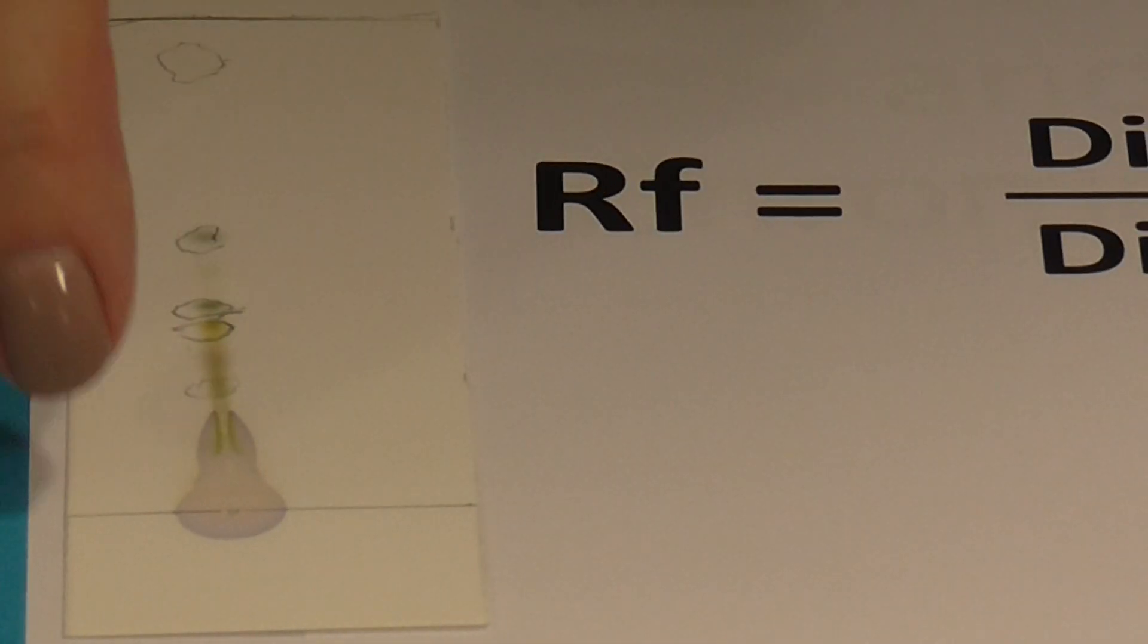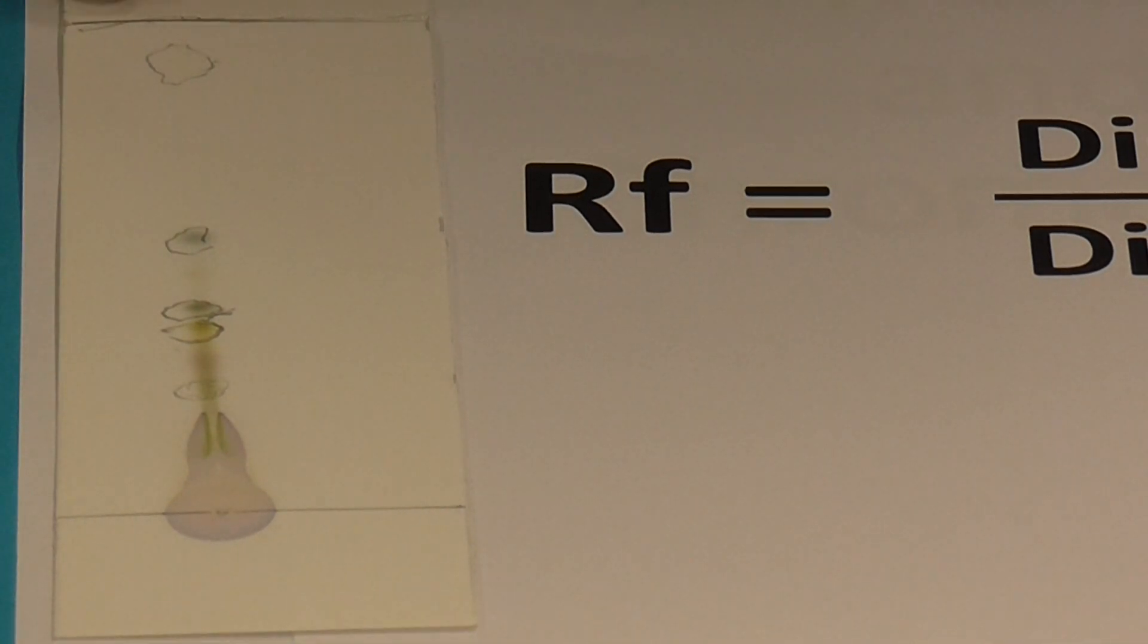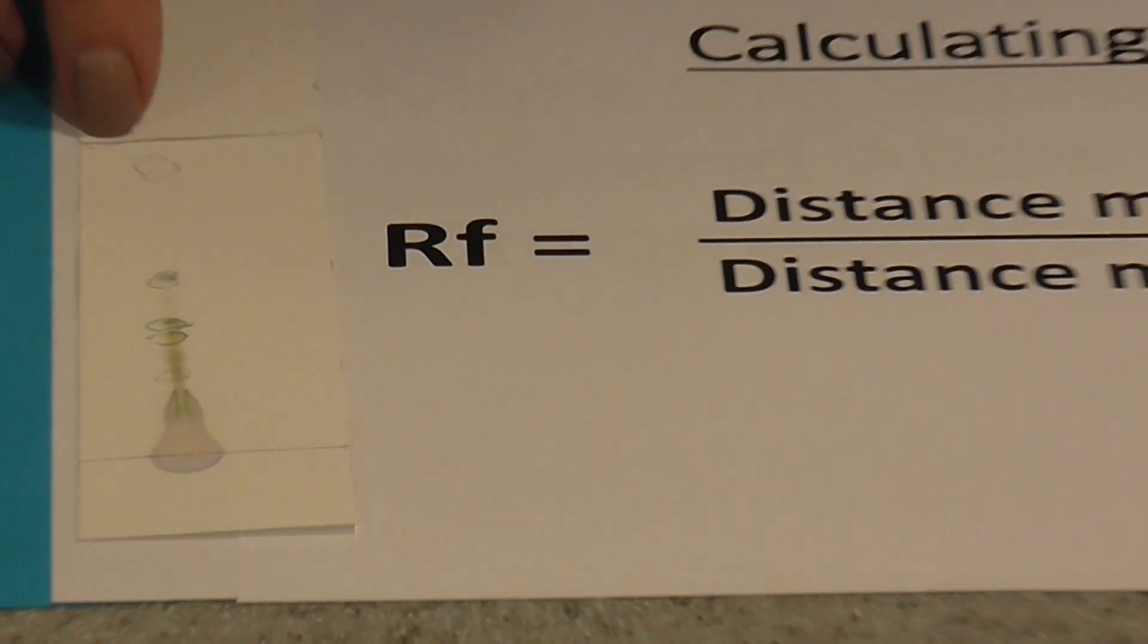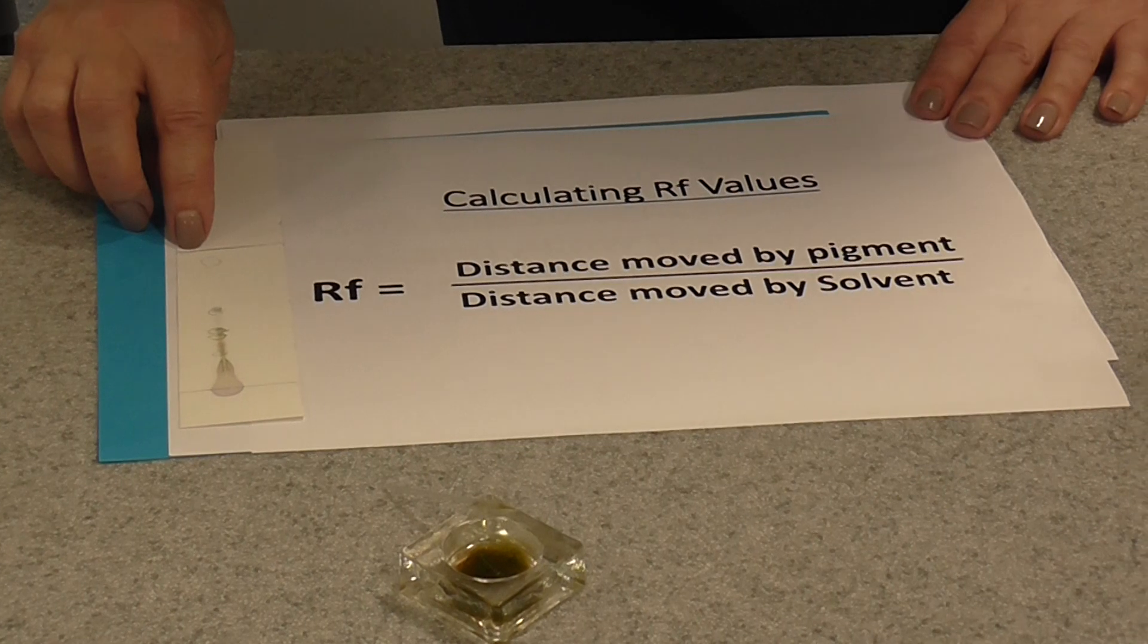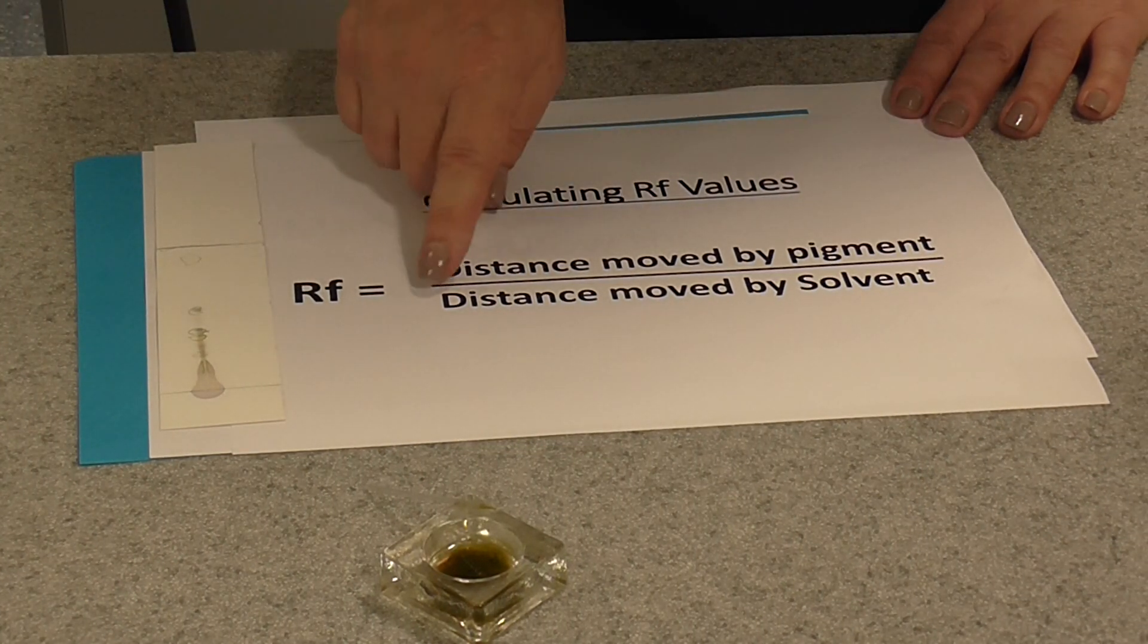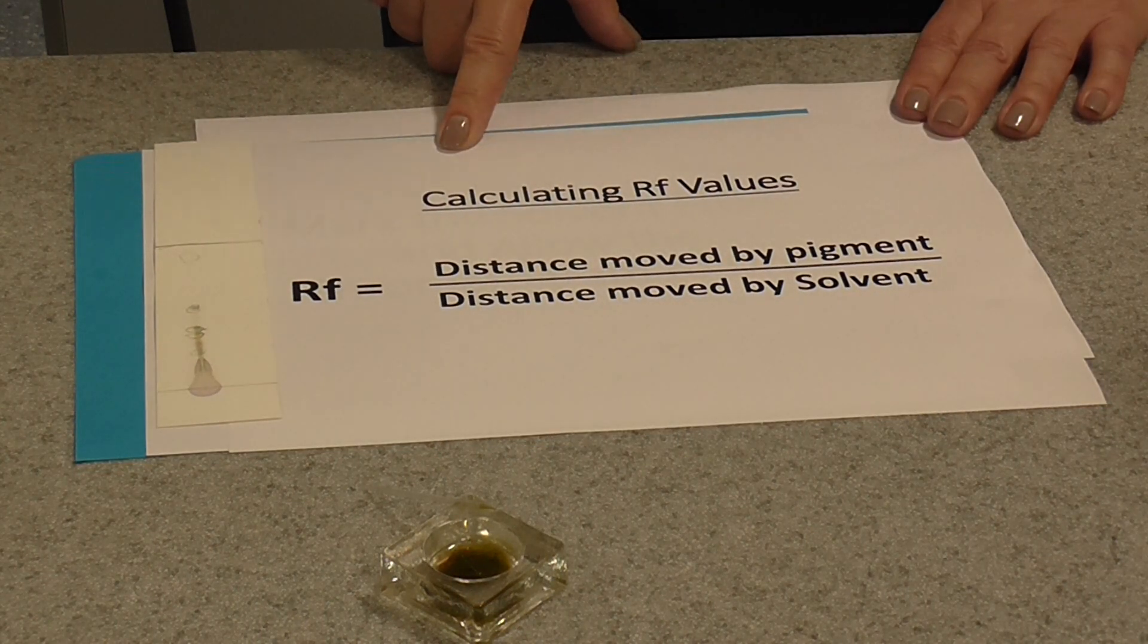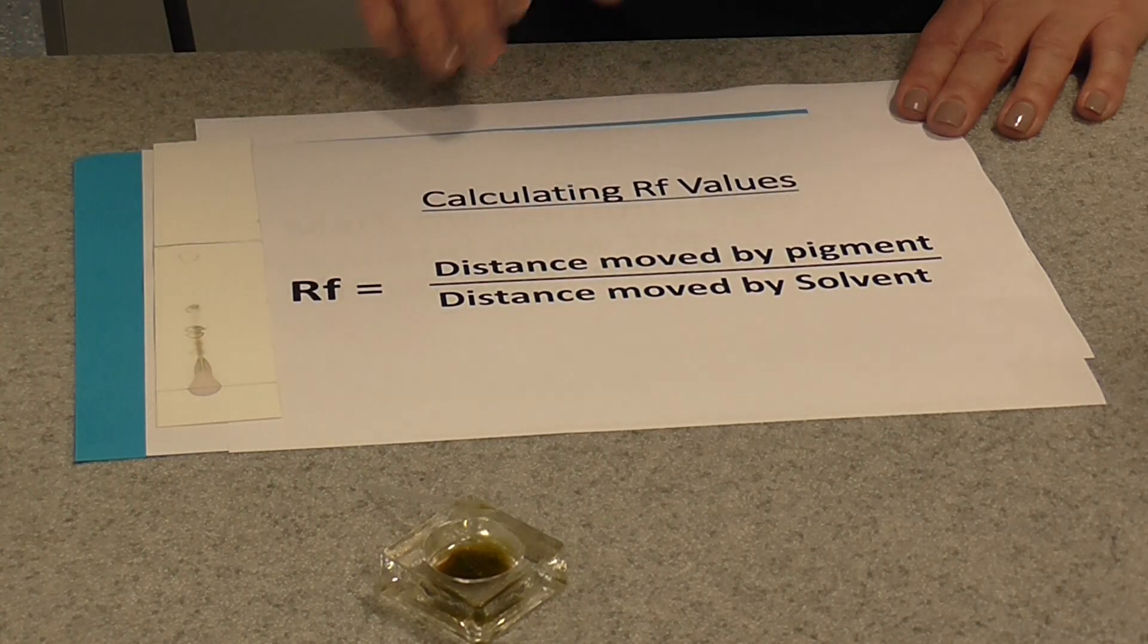You also need to measure the distance moved by the solvent from the origin up to the solvent front that you marked when you removed your TLC plate. It's simply the distance moved by the pigment divided by the distance moved by the solvent. That will give you an RF value for each pigment that you can see.